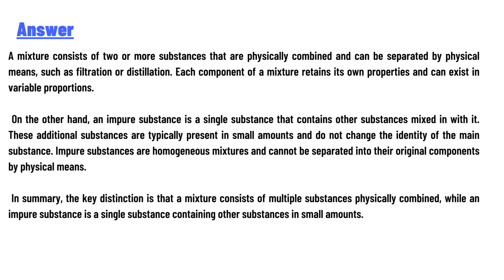On the other hand, an impure substance is a single substance that contains other substances mixed in with it. These additional substances are typically present in small amounts and do not change the identity of the main substance. Impure substances are homogeneous mixtures and cannot be separated into their original components by physical means.